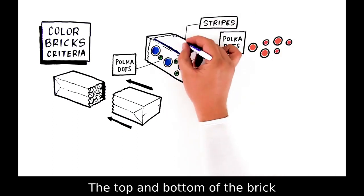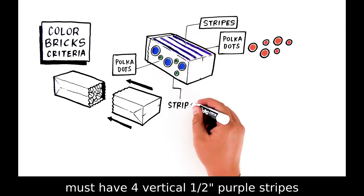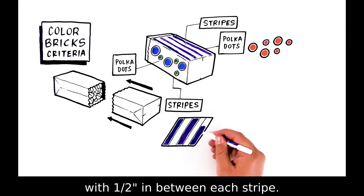The top and bottom of the brick must have four vertical half-inch purple stripes with a half-inch in between each stripe.